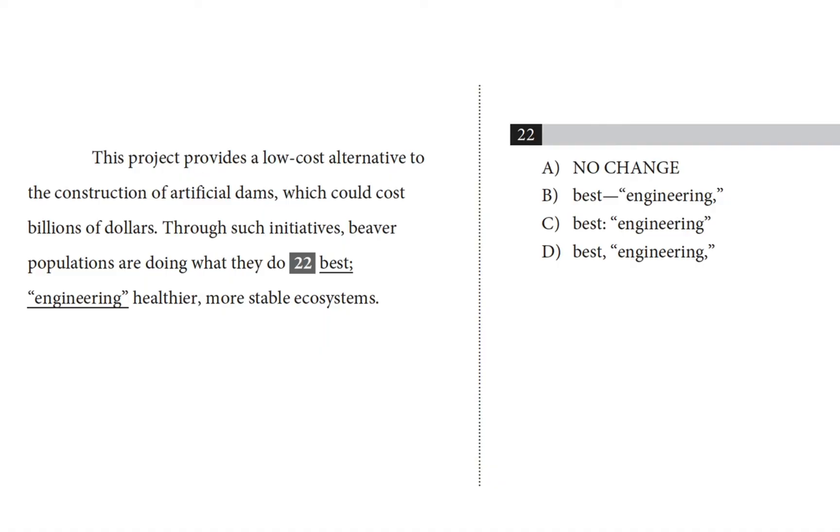So let's go back and check the clause and see what we learn. Remember, an independent clause has to be able to stand on its own as a sentence. So we need a subject and a main verb. I see beaver populations as our subject and are doing as our verb. So this is an independent clause here.